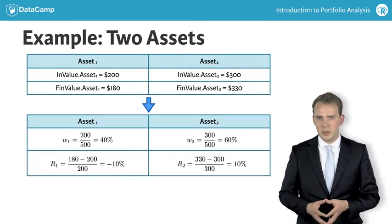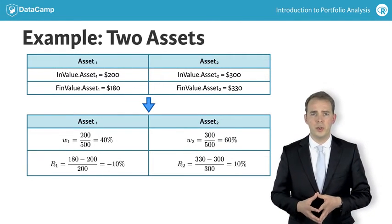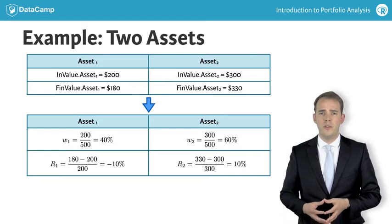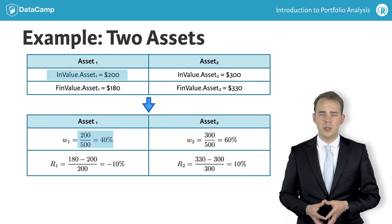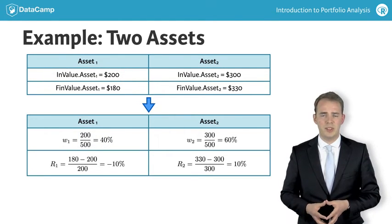In the slide, you see how to apply this formula to compute the return for our example portfolio with two assets. We first compute the initial portfolio weights. Since the initial value of the first asset is $200 and the total value invested is $500, the initial weight of asset 1 is 40%. The remainder of 60% is the weight of asset 2.